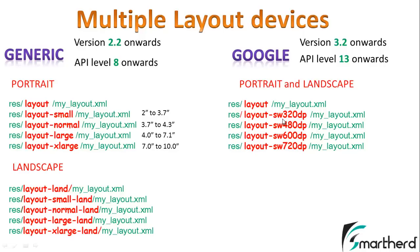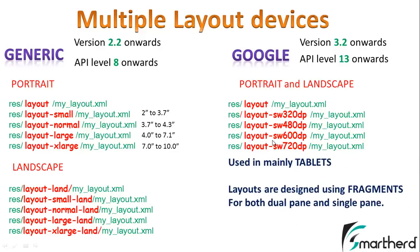SW stands for smallest width — the smallest width that the user's device has at any time. You might wonder why there are two columns shown here. The right-hand side column is for designing portrait and landscape modes mainly for tablets, where layouts are designed and stored using fragments, supporting both dual pane and single pane. We will talk about the right-hand side column in detail when we discuss fragments.